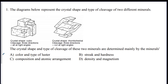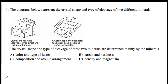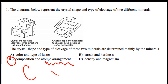We're going to do some practice questions, so have your reference table out. Number one: the diagram below represents a crystal shape and the type of cleavage of two different minerals. The crystal shape and type of cleavage are determined mainly by what? 99% of the time, if you see something about the arrangement of the atoms, it's probably the right answer. The atomic arrangement of atoms determines physical properties such as hardness and breakage pattern. So the answer is C.